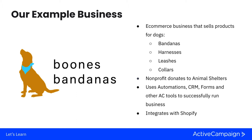First and foremost, let's talk about Boone's Bandanas. Boone's Bandanas is our example business that our account is built around. It's an e-commerce business that sells different products for dogs like bandanas, leashes, harnesses, collars, you name it. They also have a non-profit side to their business in which you buy a bandana and they donate a bandana to animal shelters so that animals can get adopted at any and all times.